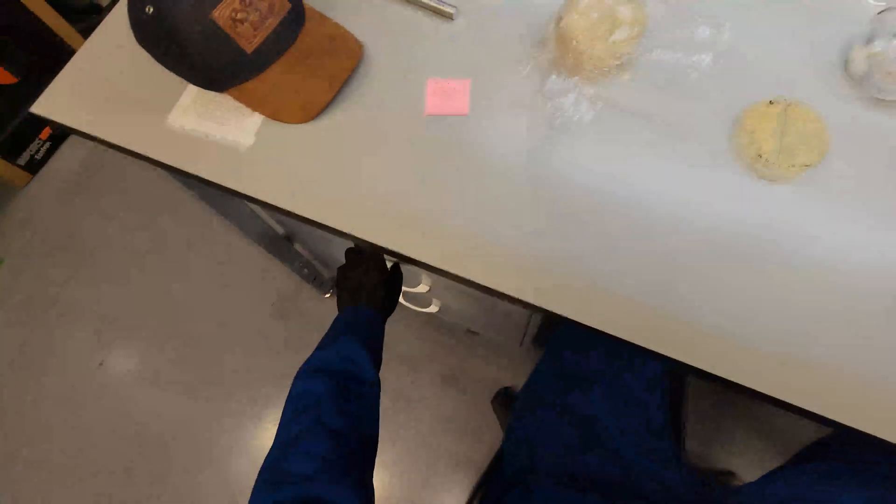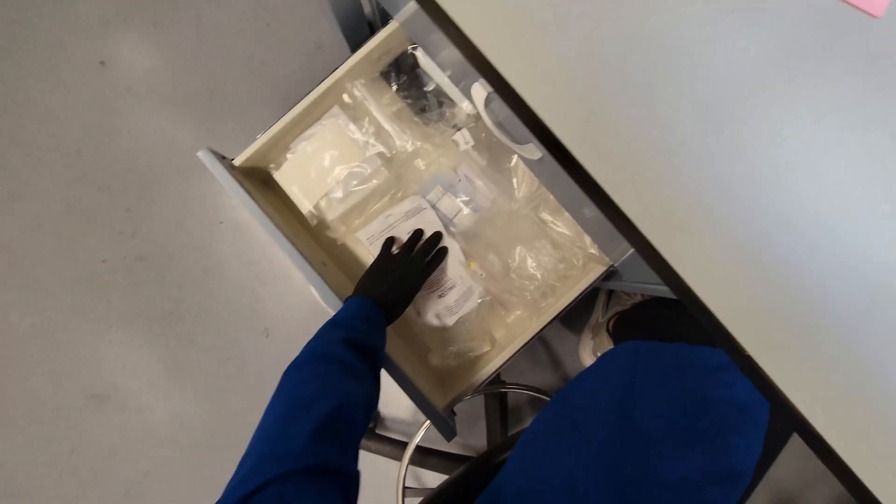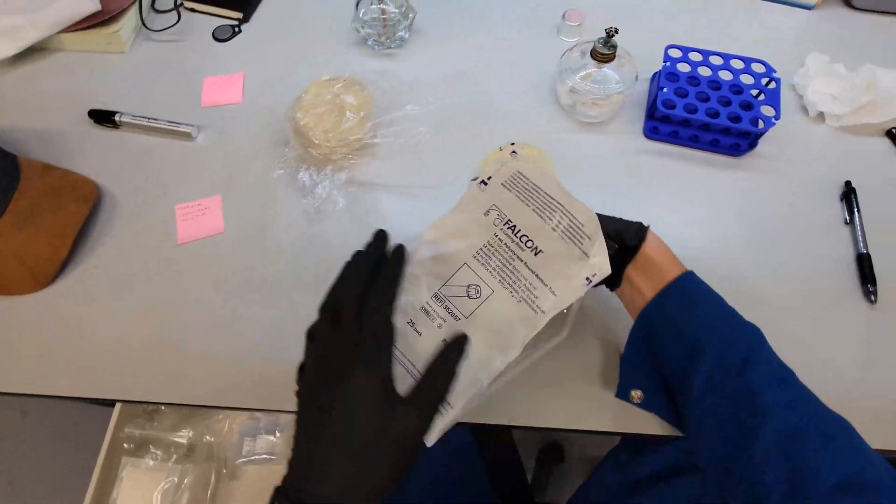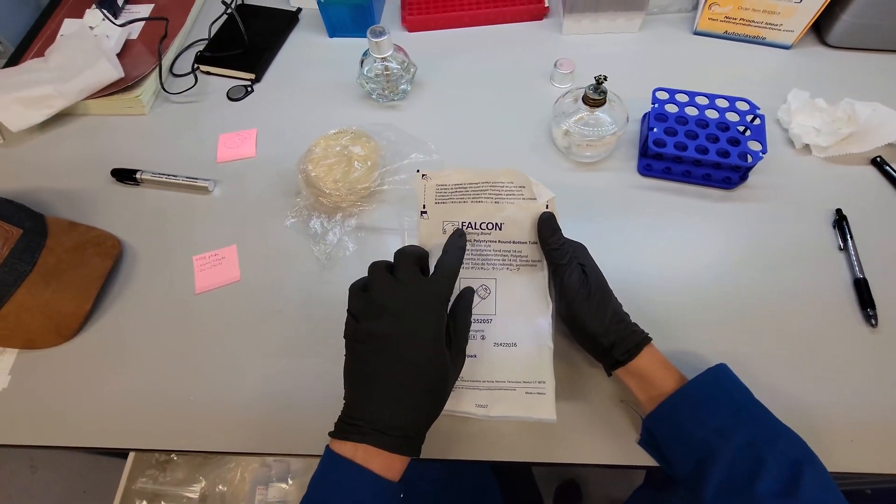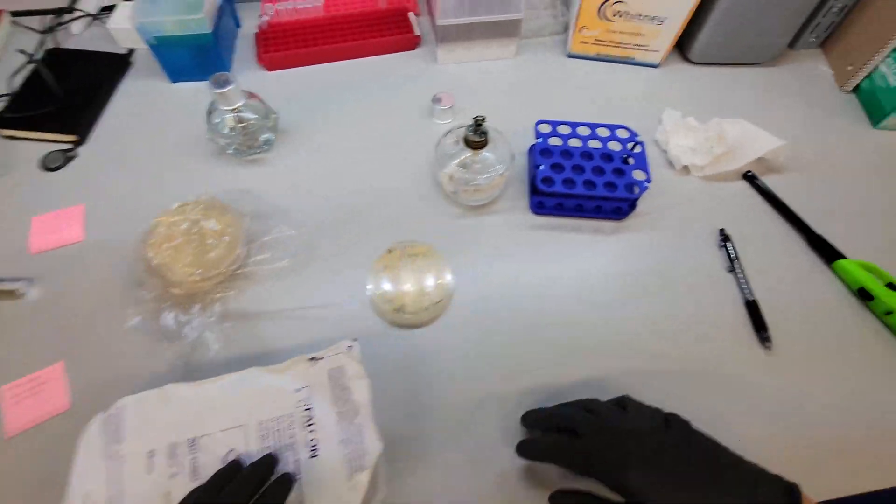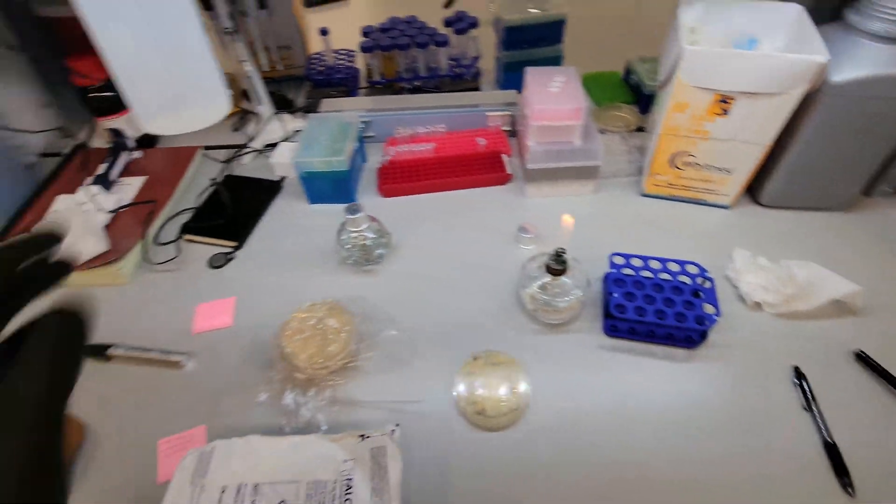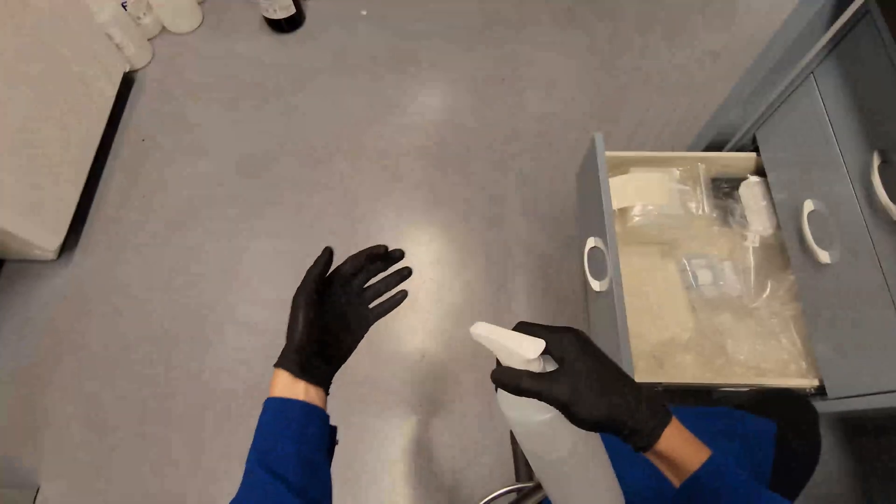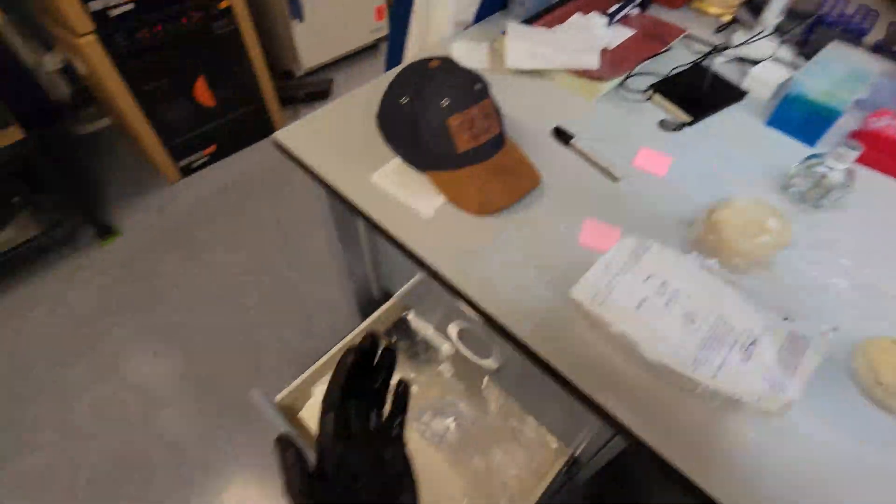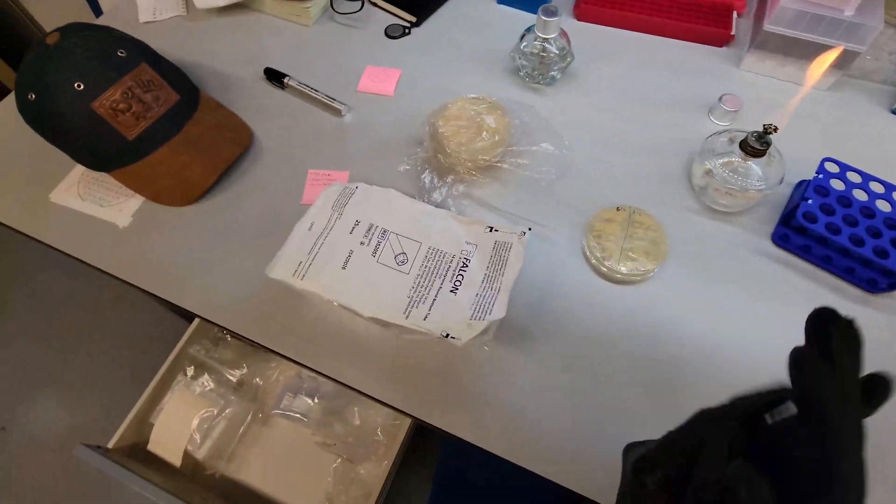And this is our 15 mil tube rack. Down in here I've got culture tubes. So these are 14 milliliter Falcon brand culture tubes. Let's start this flame going. I'm also gonna, away from the flame, spray some ethanol on my hands, just to make sure my gloves are sterile.